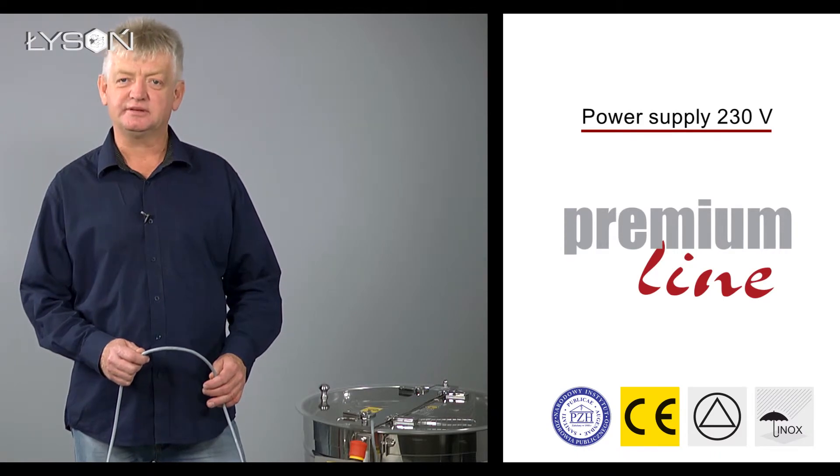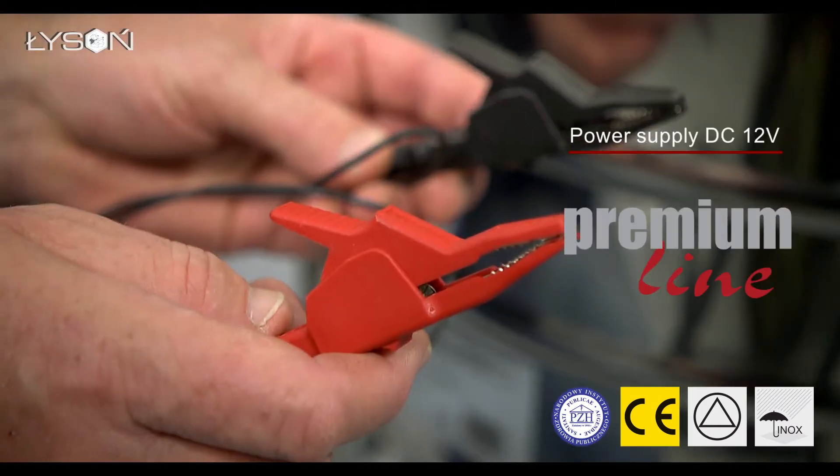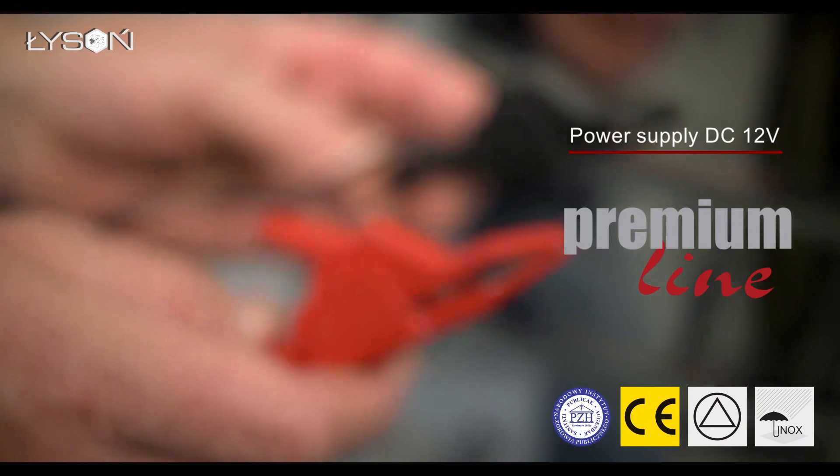The motor is powered with 230 volts AC. Or if this power source is not available, or our apiary is located somewhere in the countryside, we can use any 12 volt DC power source.